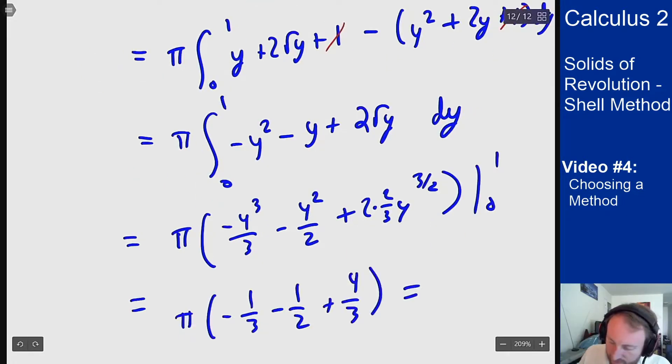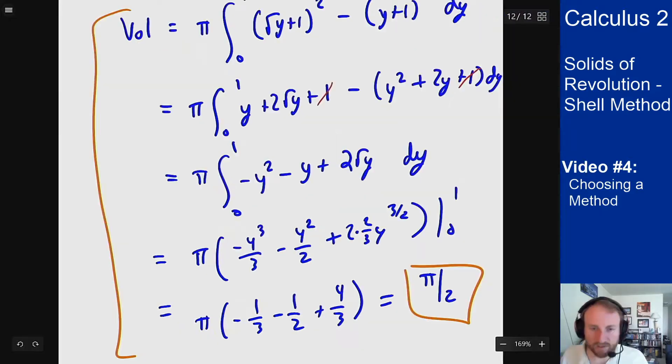Then plugging in one gives me pi over two again. So like I mentioned before you get the same answer no matter how you solve out this problem. It's going to be the same volume no matter which way you do it.